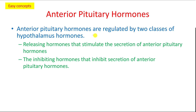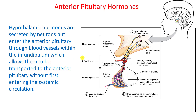For the anterior pituitary, those hormones are still under the hypothalamus hormones. There are stimulating hormones coming from the hypothalamus, and those hormones can increase the production of the anterior pituitary hormones or they can reduce it.